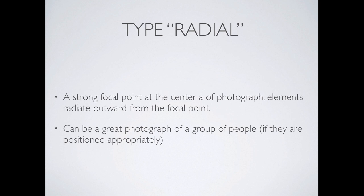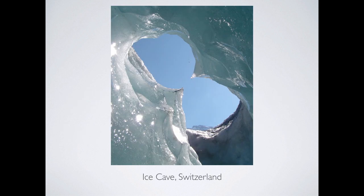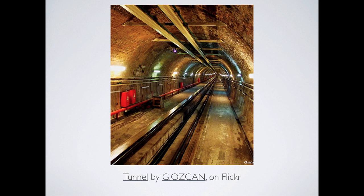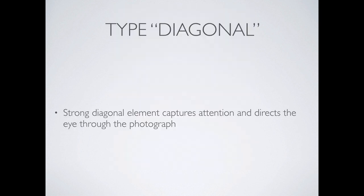Radial is that you're starting at a center strong focal point and everything radiates outward from that strong focal point. This one is very circumstantial — it has to just happen. It's hard to go out and say I'm going to set up a radial composition. It might be something like this ice cave in Switzerland where you've got this tension between those two melted points creating that strong center focal point, and everything else radiates outward. Another example: looking down a tunnel, we've got that center focal point and everything is radiating from there. And there's a great one of a hot air balloon where all the seams come out from that strong focal point, and the shadows of the people really activate this particular composition.